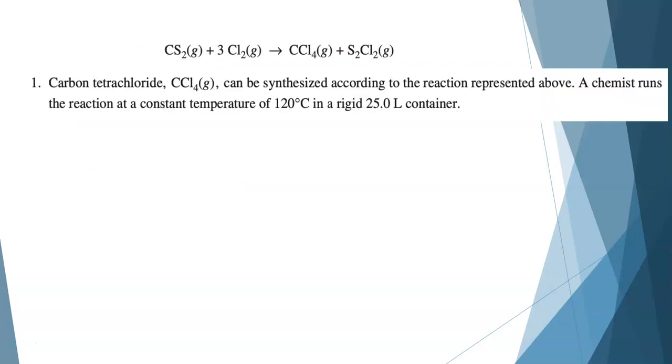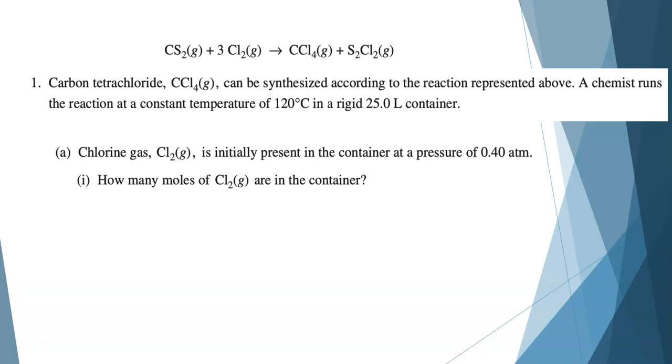Let's jump right in. Carbon tetrachloride, CCl4, can be synthesized according to this chemical equation. A chemist runs the reaction at a constant temperature of 120 degrees Celsius in a rigid 25.0 liter container. Chlorine gas is initially present in the container at a pressure of 0.40 atmospheres.